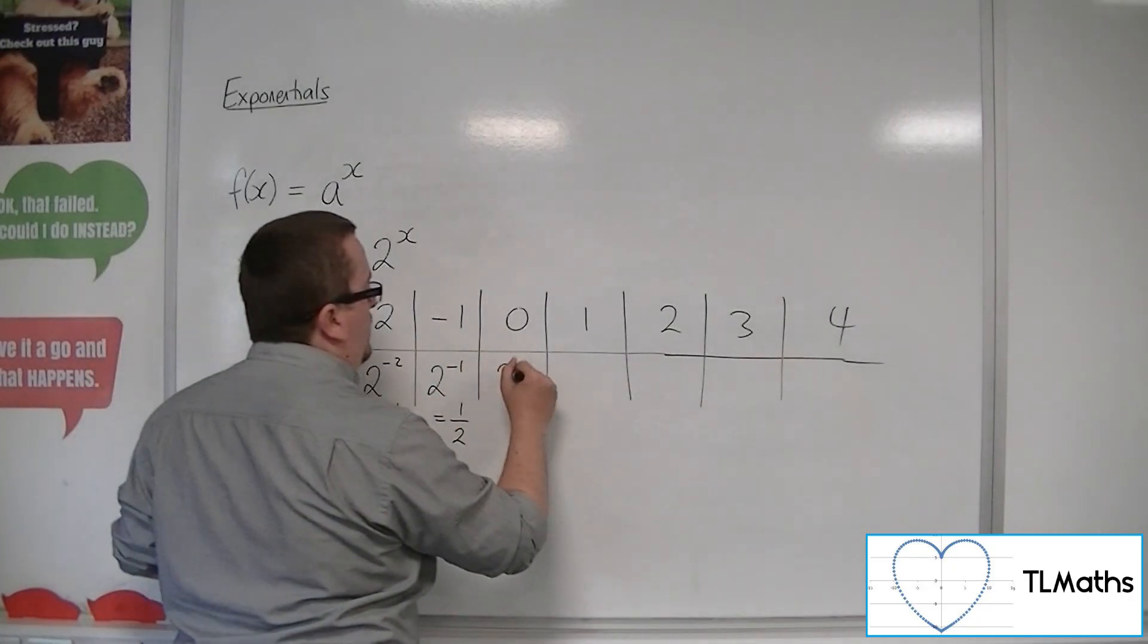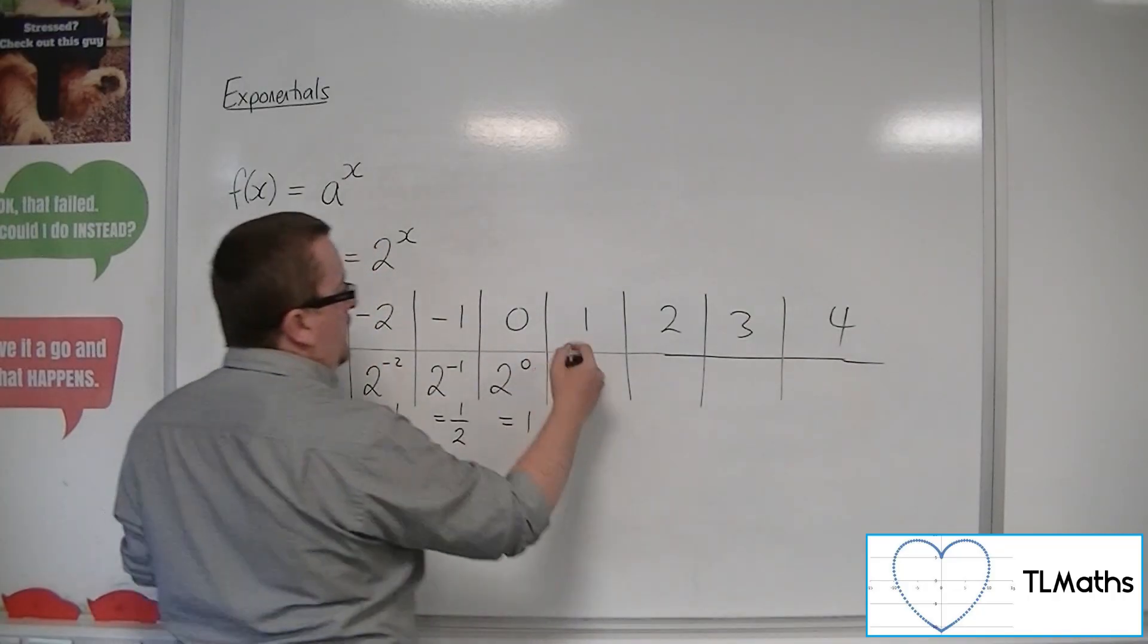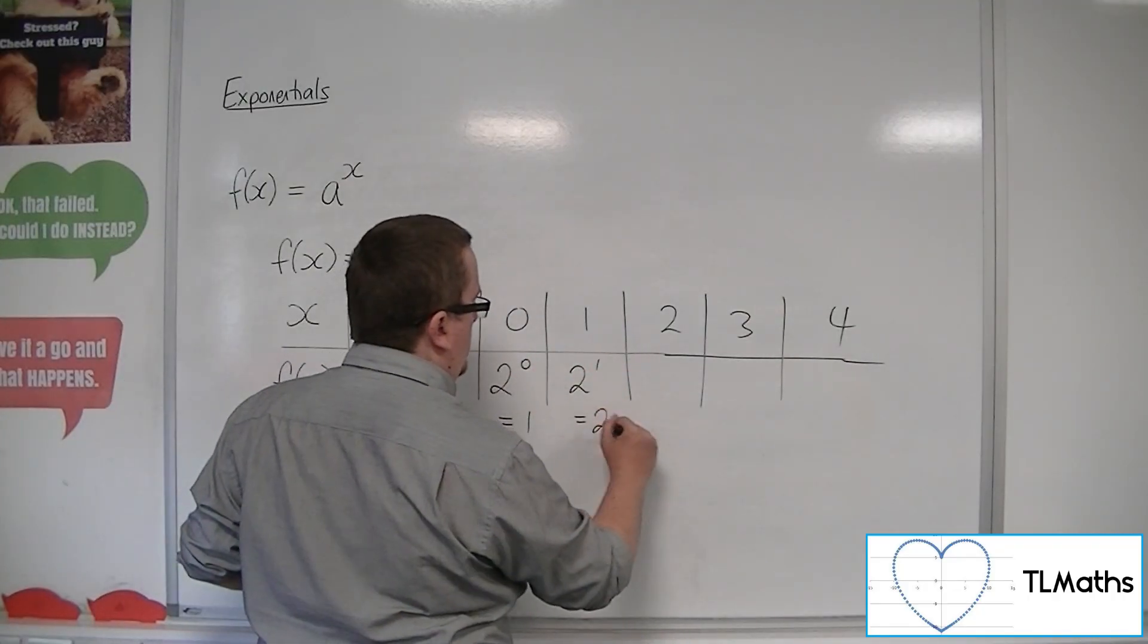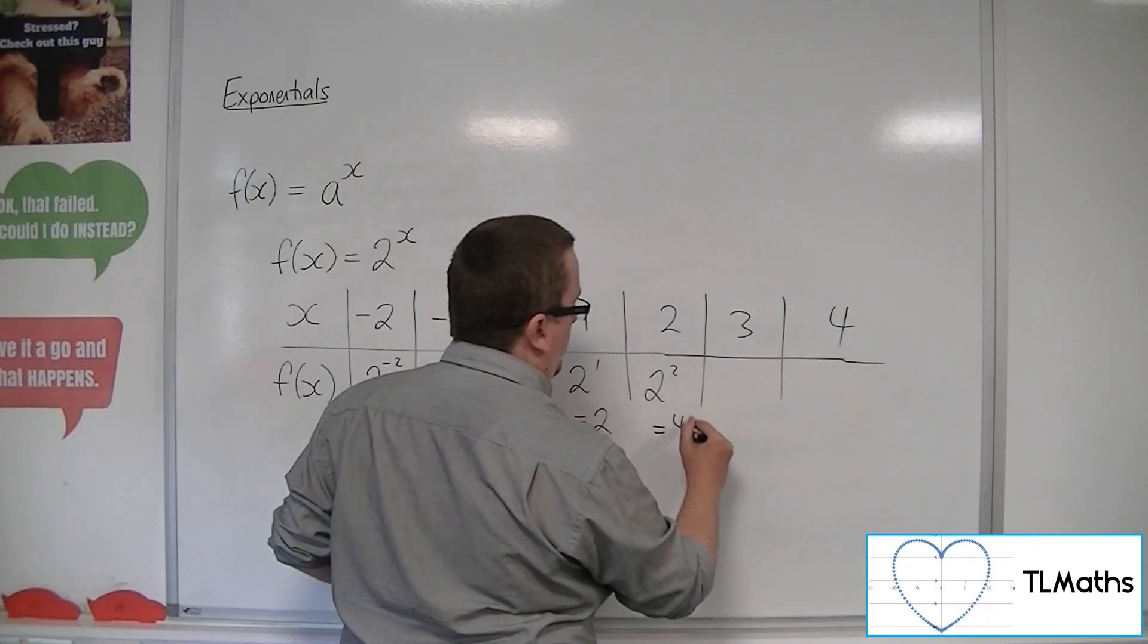Then we've got 2 to the power of 0, which will be 1. 2 to the power of 1, well, that's just 2. 2 to the power of 2, that's 4.